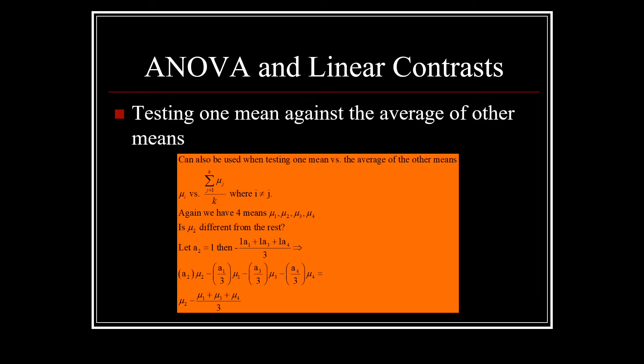Perhaps we'd like to test one mean against the average of other means. So we're going to have mu_i versus the sum of j equal 1 to k of mu_j over k where i does not equal j. Let's assume we still have four means, mu1, mu2, mu3, and mu4, and we'd like to test to see if mu2 is different from the rest. Then we'll let a2 equal 1 and we'll have negative one third a1 plus negative one third a3 plus negative one third a4. And so what we get is mu2 minus mu1 plus mu3 plus mu4 over 3.